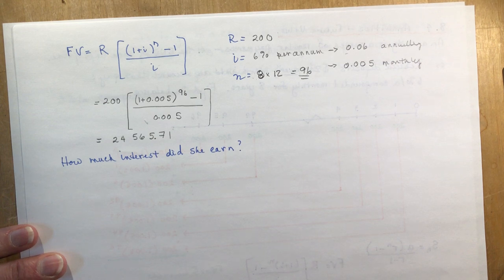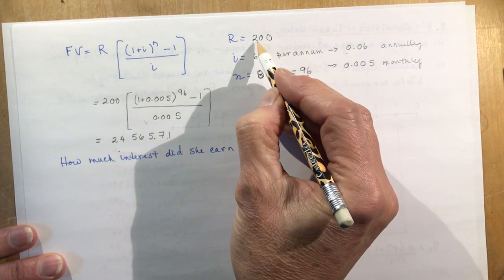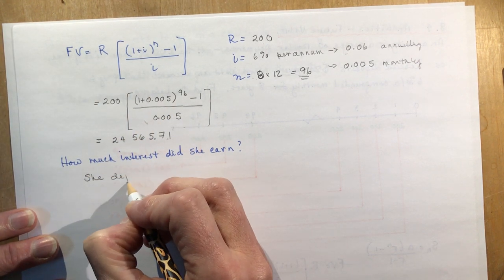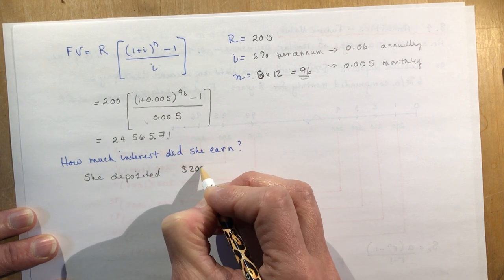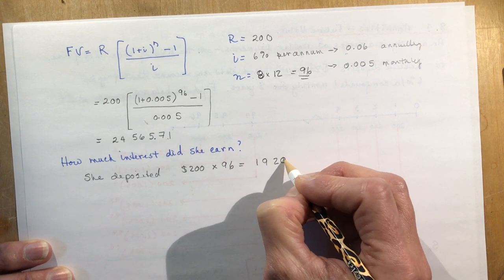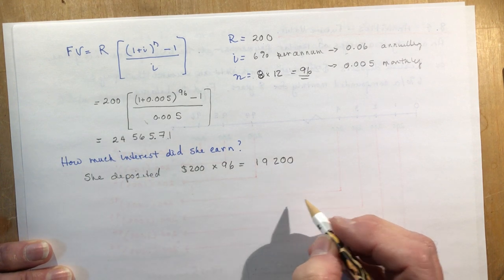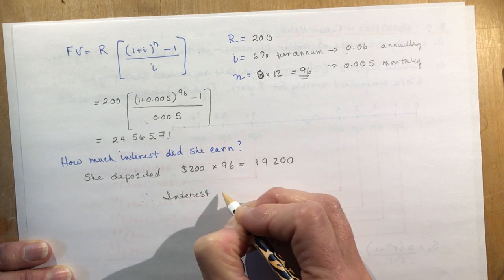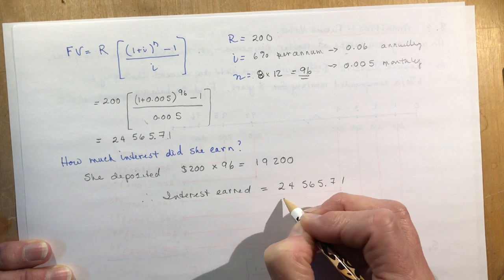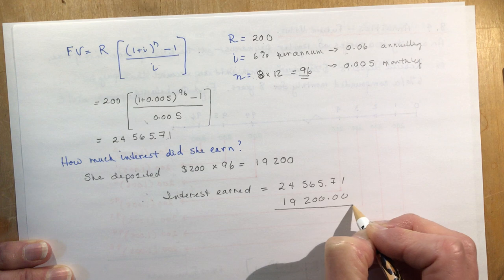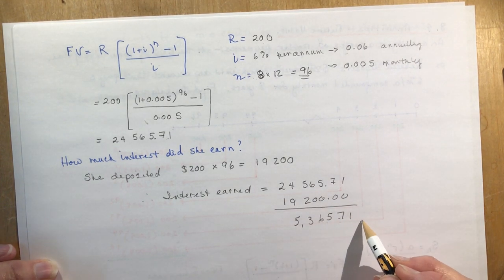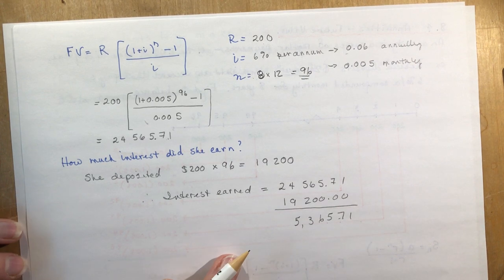The next question says, how much interest did she earn? We know this is the future value and we know how much she put in. She deposited $200 how many times? 96 times. So 200 times 96, she deposited $19,200. And look how much she got. She's so smart. So her interest earned is going to be the difference between the future value, 24,565.71, and we're going to subtract $19,200. That's going to give us $5,365.71 in interest. Not bad over eight years.